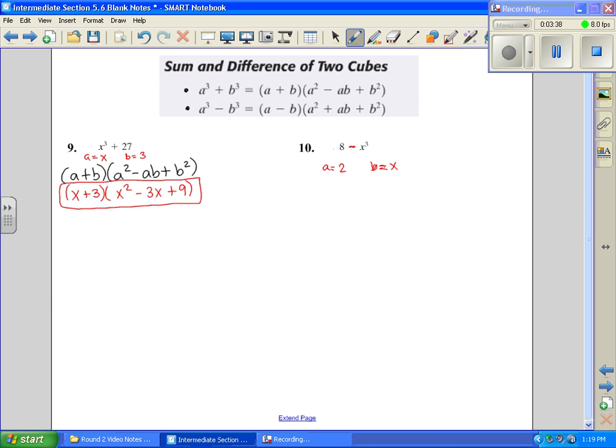And now because this is subtraction, I want to use my subtraction, my difference of two cubes formula, so it's A minus B, A squared plus AB plus B squared. Now you are going to have to memorize these two formulas right here, so make sure you get in the practice, and it's best just to write them down every time. That's the easiest way to start memorizing. Now substitute in 2 minus X. 2 squared is going to be 4 plus 2X plus B squared. And we're done on that one.